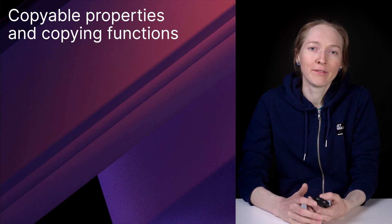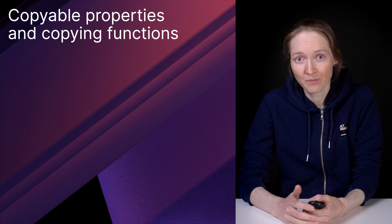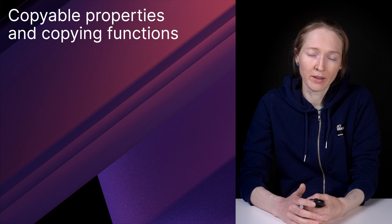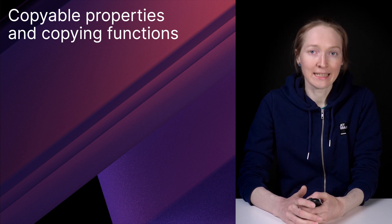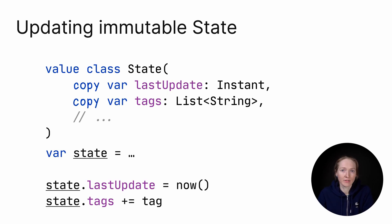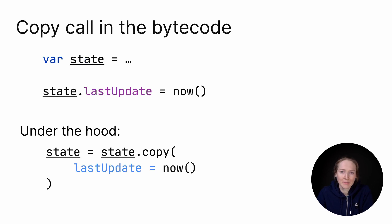To provide immutable value classes as a default choice for your business entities, it should be really convenient to work with them in Kotlin. Ideally, the syntax should be no more complicated than working with mutable data classes. One more hypothetical feature can help: copyable properties and copying functions. Copyable properties allow you to conveniently copy and modify immutable data – a concept similar to mutating functions in Swift. You mark a property as copyable using the copy modifier. After that, you can update values as usual, but what happens behind the scenes is that a new copy is created with the new value. The compiler automatically replaces one line updating a value with a corresponding copy function call in the bytecode.